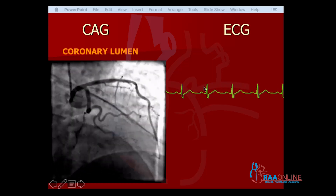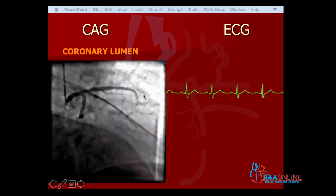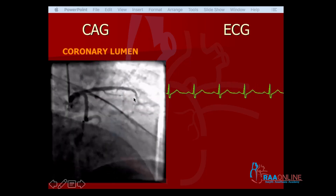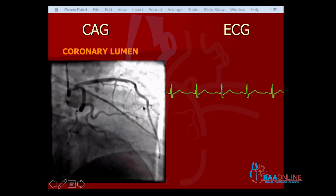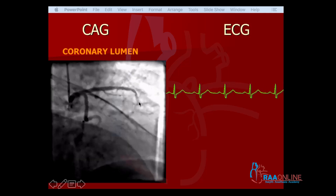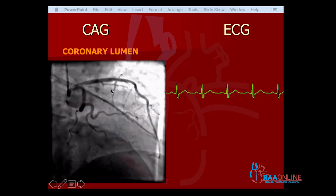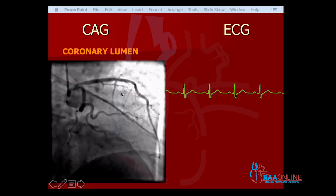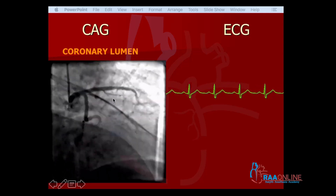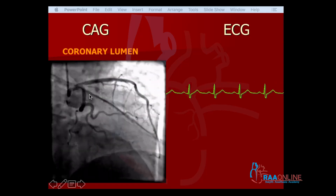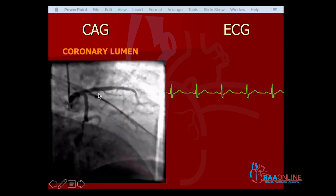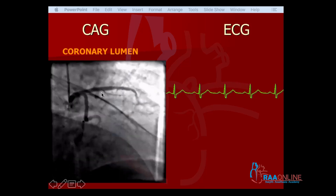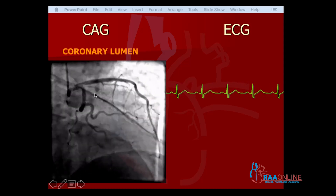You must know the difference between an electrocardiogram and a coronary angiogram. A coronary angiogram is a luminogram — it gives you the lumen of the big epicardial coronary arteries, whether they are obstructed or not. That is all the information given by a coronary angiogram. That's why it is called a luminogram.